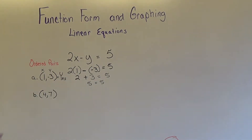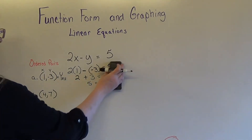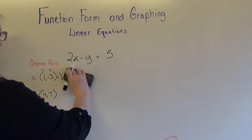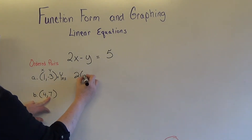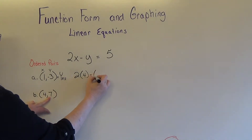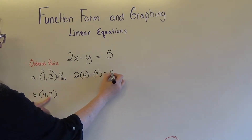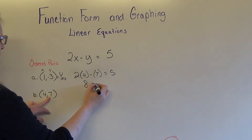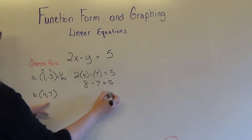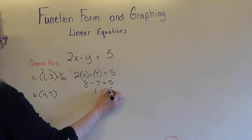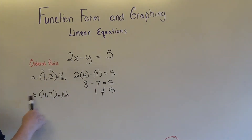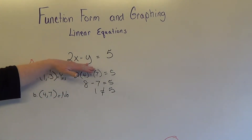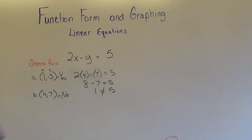Now let's try the second ordered pair to see if it lies on this line. x is 4 and y is 7, so I write 2 times 4 minus 7 equals 5. Two times 4 is 8, minus 7 equals 5. Well, 8 minus 7 is 1 and that does not equal 5. So this point, if I graphed it, would not lie on the line that this equation makes.